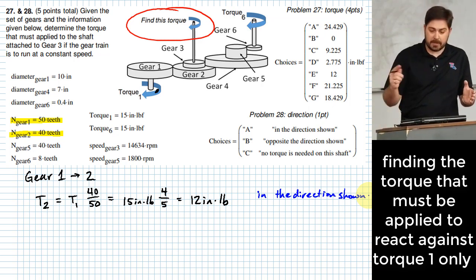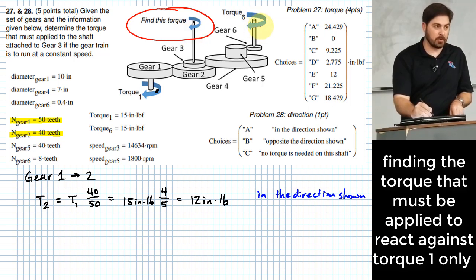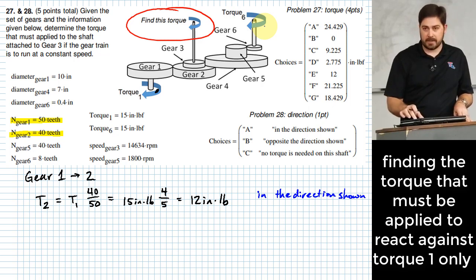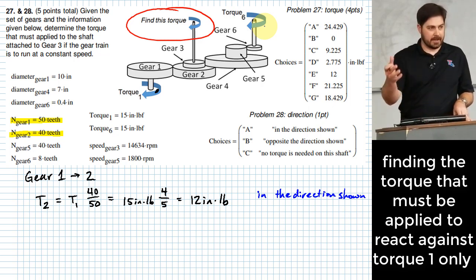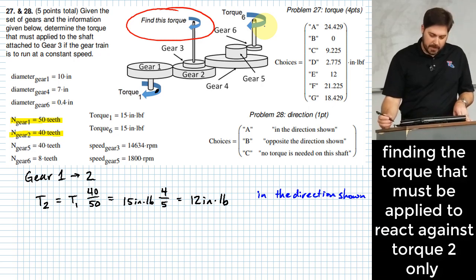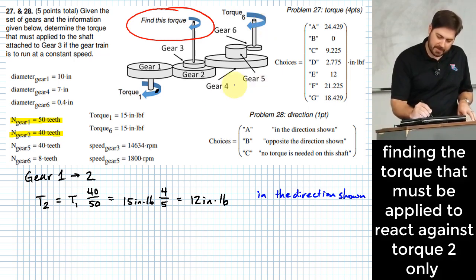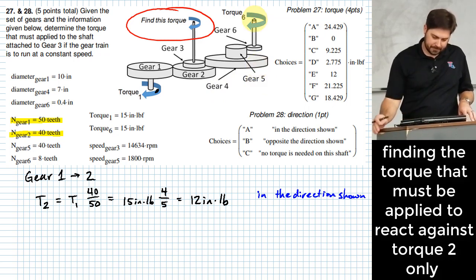Okay. Because that's important because it could be that the one coming from the opposite end might not need a torque in the direction shown to resist against that torque six. It might need to be opposite the direction shown. So I got to keep track of these so that when I do the sum, it turns out correct. Okay. So now let's go to the other end. Can we figure out how much torque is transferred to this combo gear five and four and five from six?